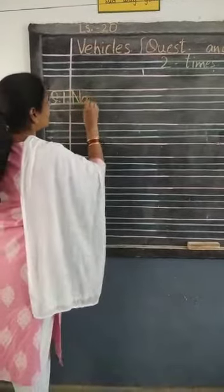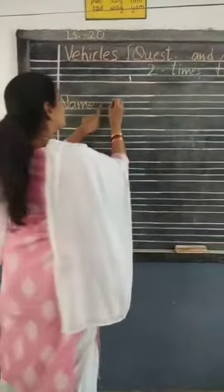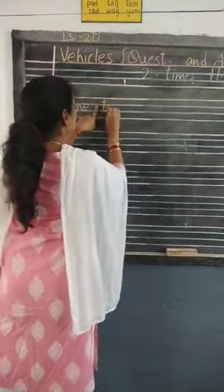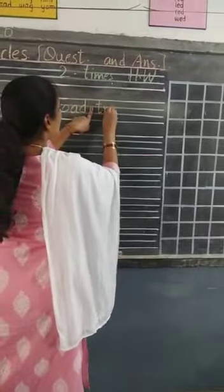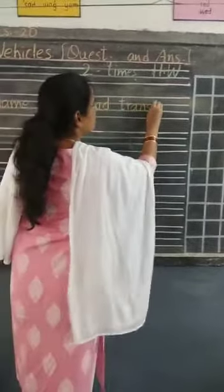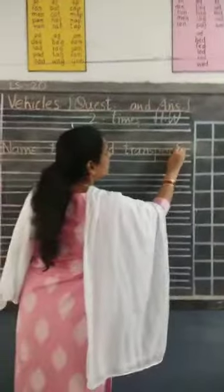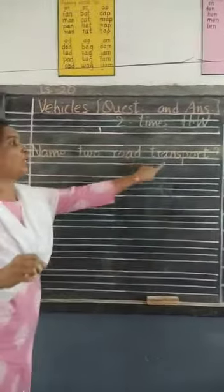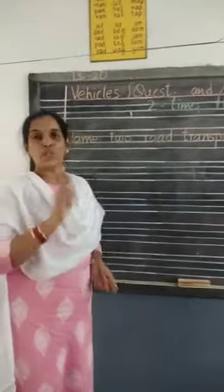Now we will start the first question. Question number one: N-A-M-E — Name, finger space, T-W-O — 2, finger space, R-O-A-D — Road, finger space, T-R-A-N-S-P-O-R-T — Transport. Question number one: Name two road transport vehicles that move on the road.